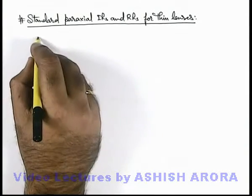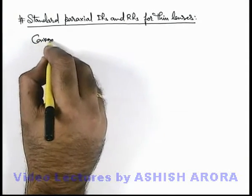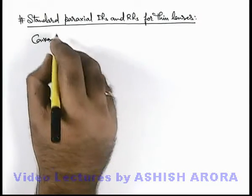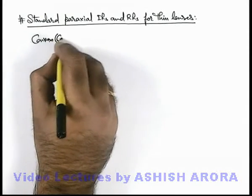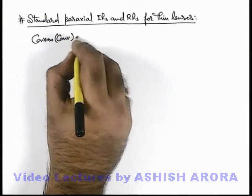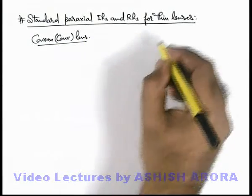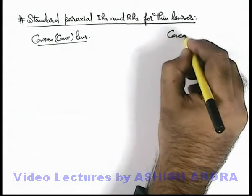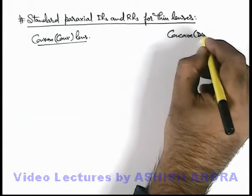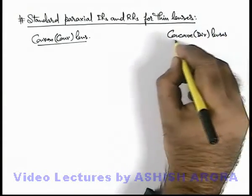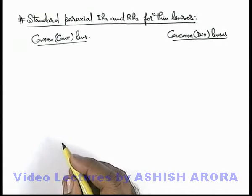We'll study for both convex lenses as well as concave lenses. Here we'll consider convex lens as converging lenses and we assume that these are placed in rarer surrounding. For concave lenses, we consider these as diverging lenses as if these are placed in rarer surrounding.